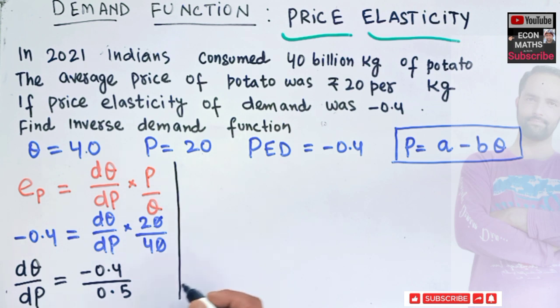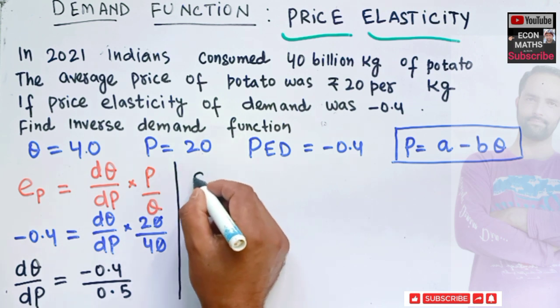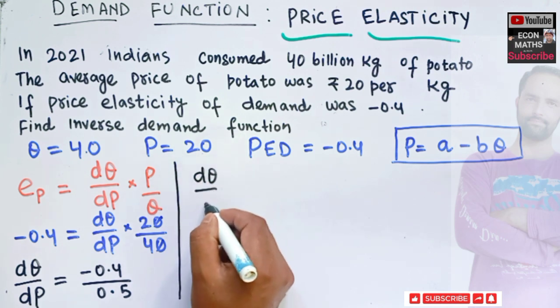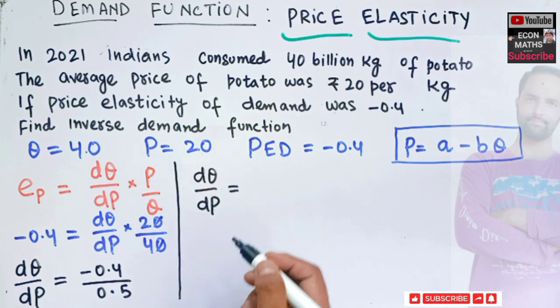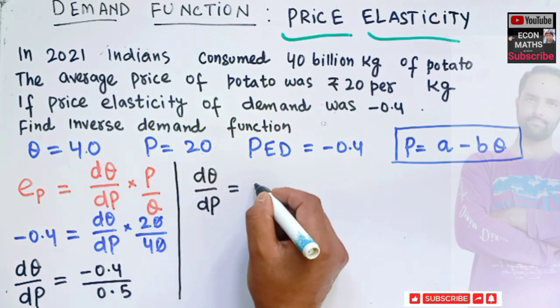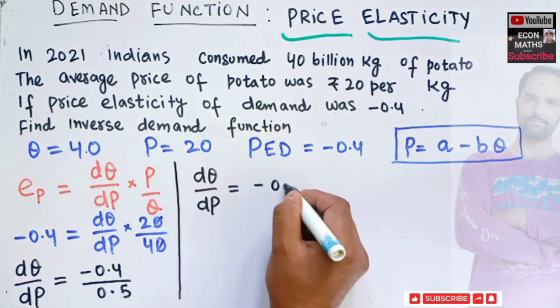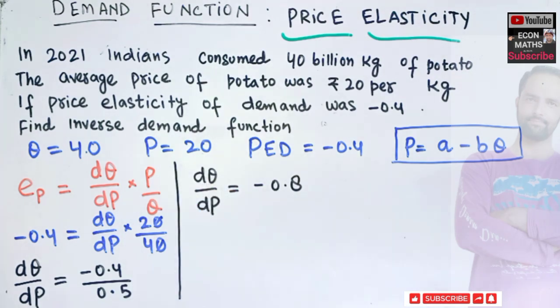That gives us dQ upon dP is equal to minus 0.8. We got dQ upon dP, but we need to find out dP upon dQ.